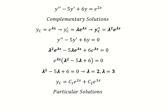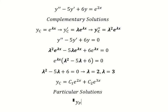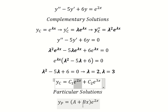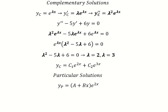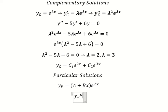We can see that we have e to the power of 2s in the forcing function, and since e to the power of 2s repeats with our complementary solution, we need to increase by one unit. So I will put yp equal to (a plus bs) times e to the power of 2s. Next we need to find the first derivative of yp.